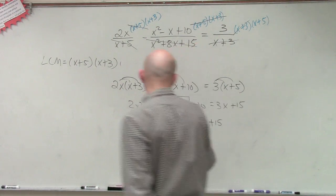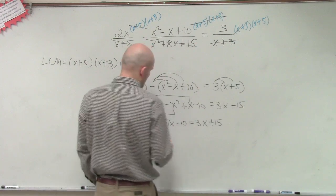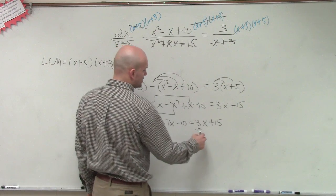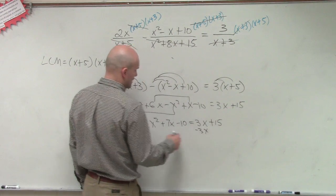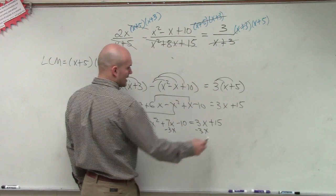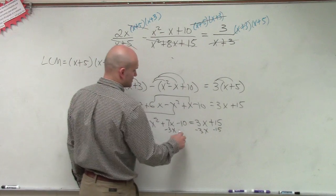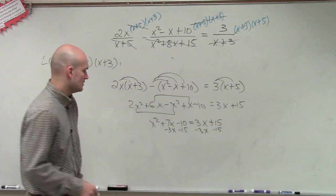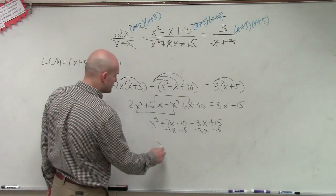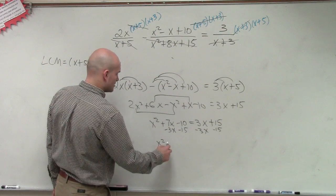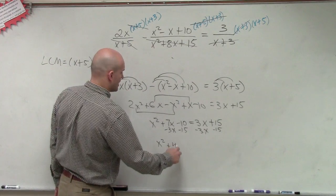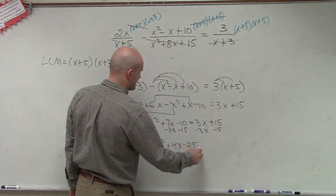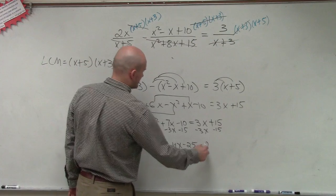So now I'll get everything over to the same side so it equals 0. I subtract 3x and subtract 15, making sure I do that on the same side. Therefore I'm left with x² + 4x − 25 = 0.